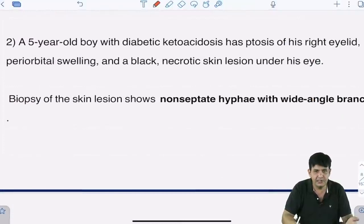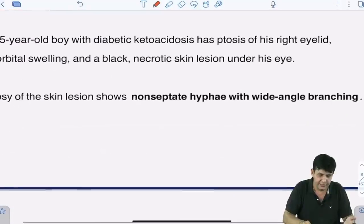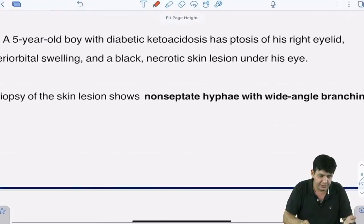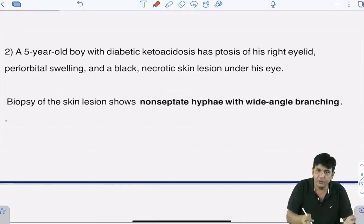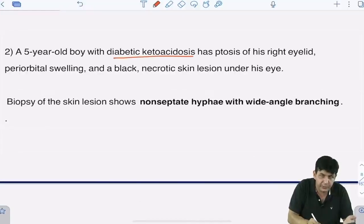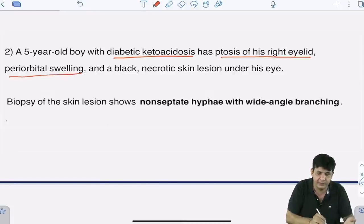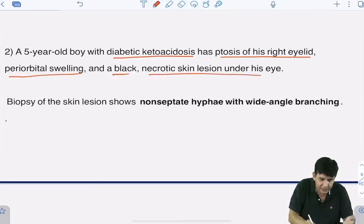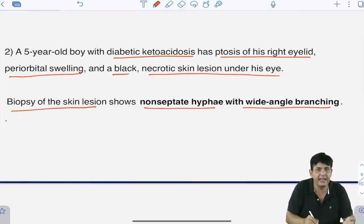This is one of the hot favorites of examiners nowadays. A five-year-old boy with diabetic ketoacidosis has ptosis of his right eyelid, periorbital swelling, and a black necrotic skin lesion under the eye. The biopsy of the skin lesion shows non-septate hyphae with wide-angle branching.